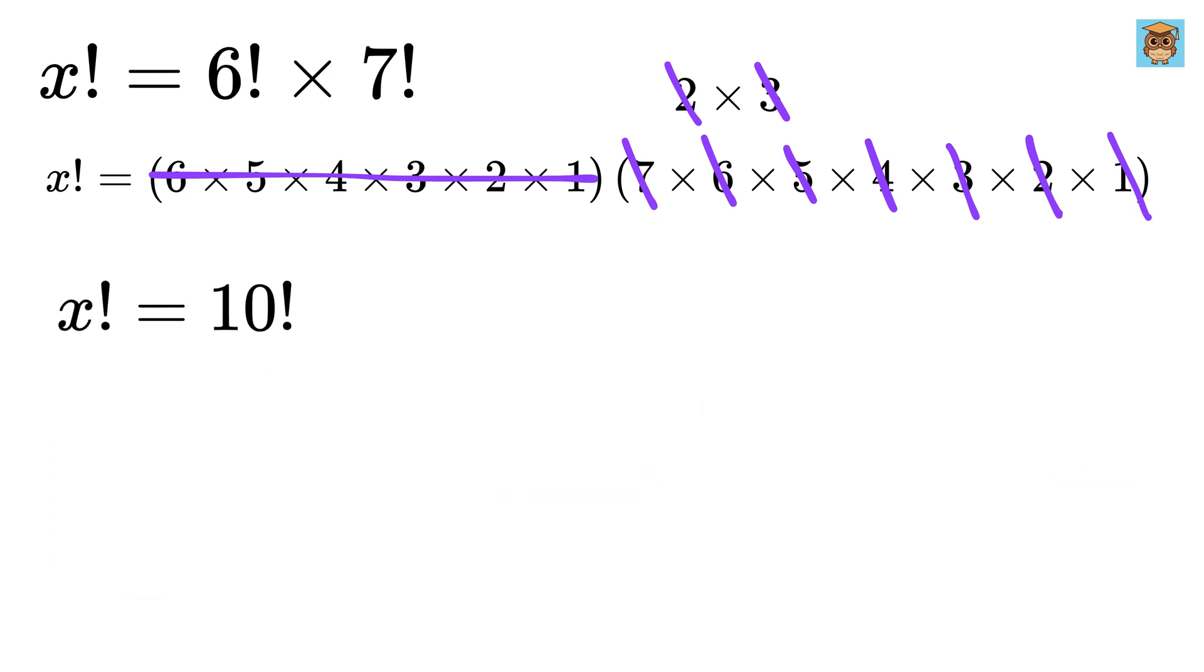So we have x factorial equals 10 factorial, and comparing both sides gives us x equals 10.